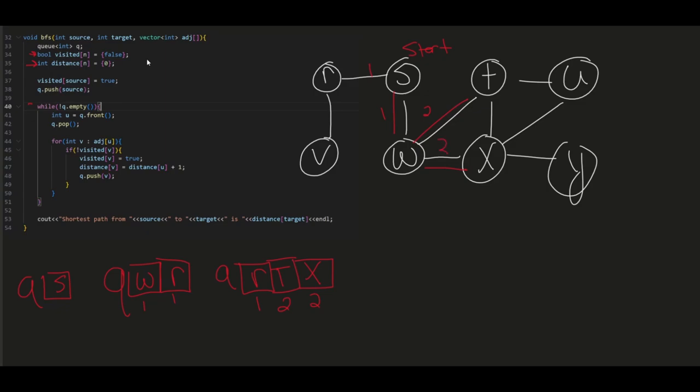Now we're still in the while loop. The queue is not empty. We pop R and we add R's neighbors. What is R's neighbors? It's V with a distance of 2. So we'll go ahead and add that one. And as you can see this is breadth first search using a queue.